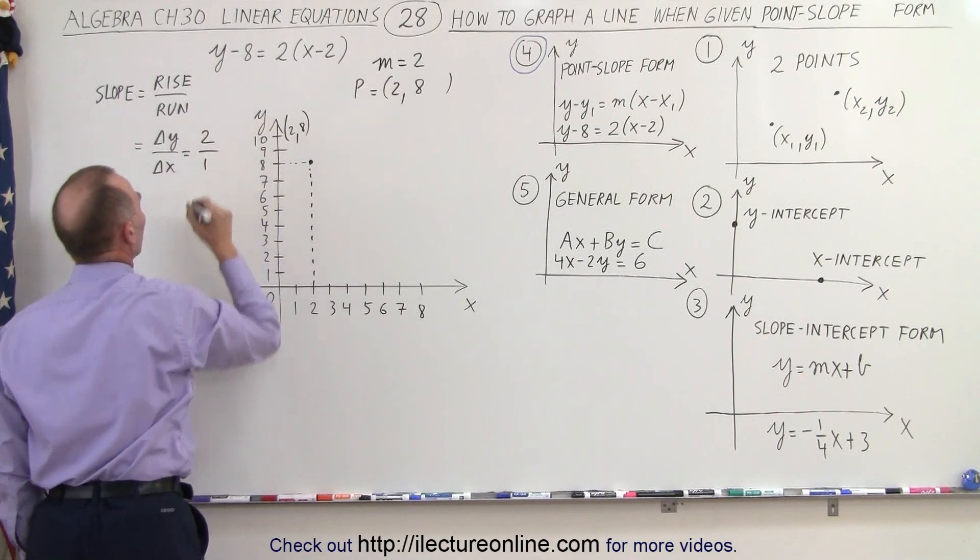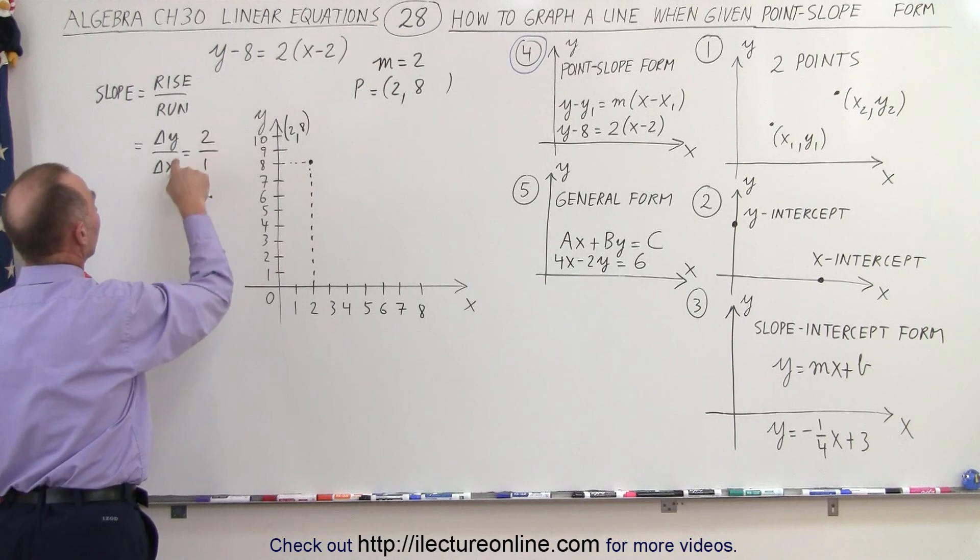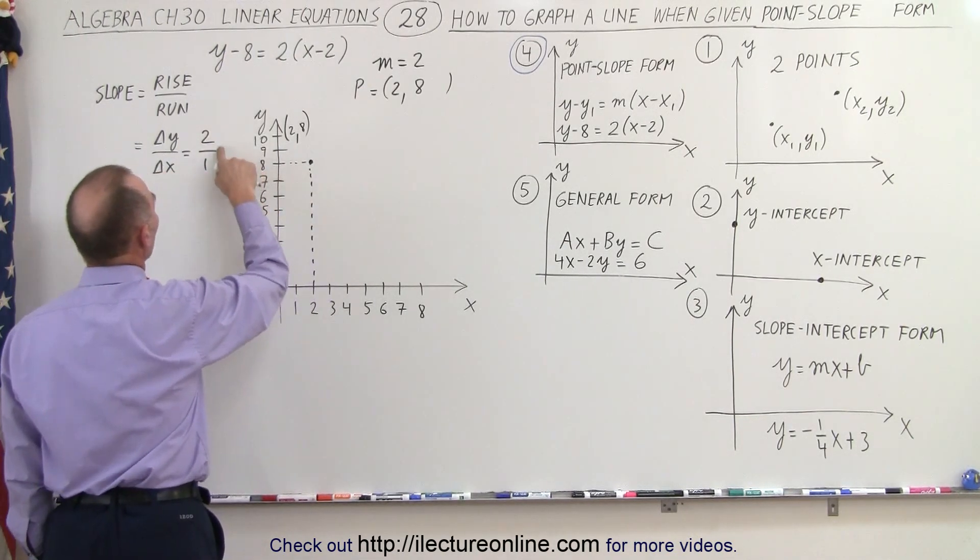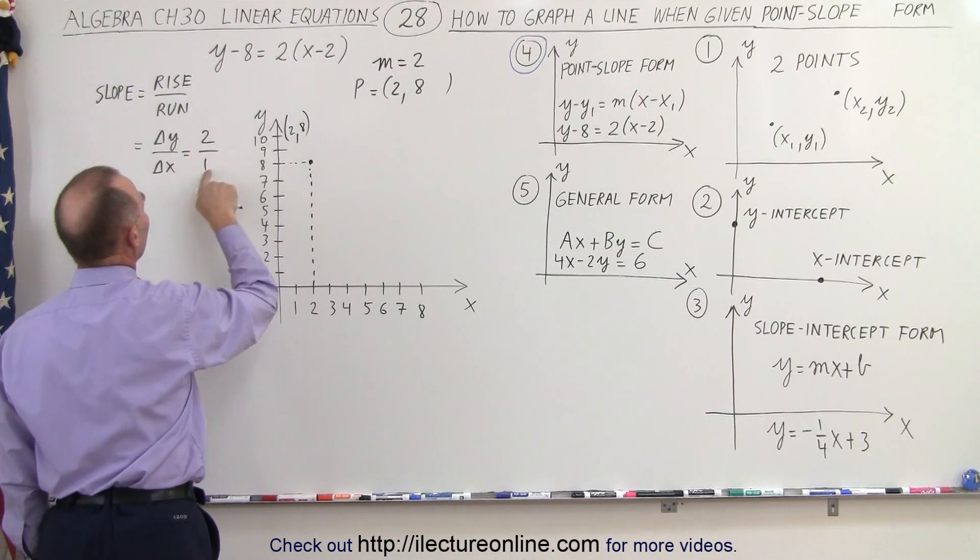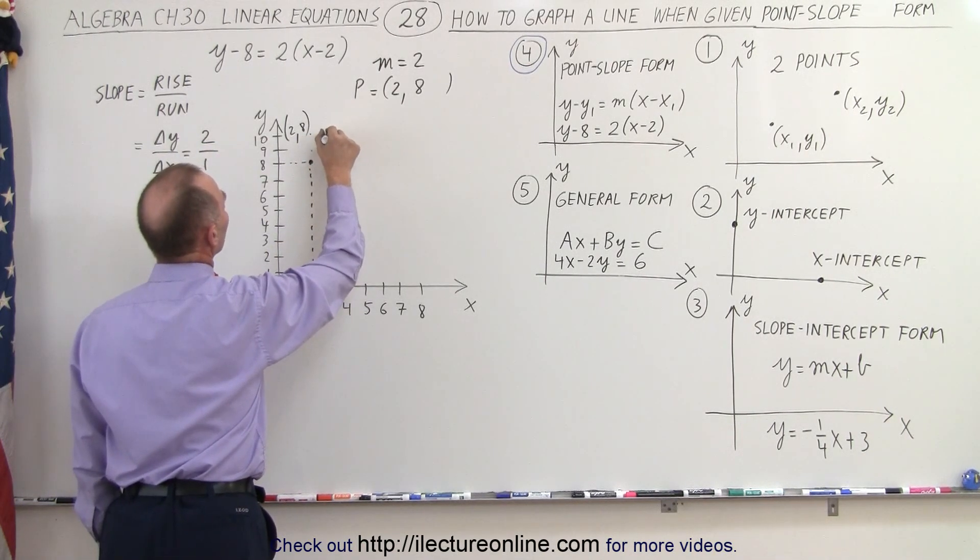But we can write it as 2 over 1, because as a fraction, we can associate the change in y and the change in x. So starting from this point, we can go up 2, that's a change in y, and over 1. So go 1, 2, and over 1, and there's another point.